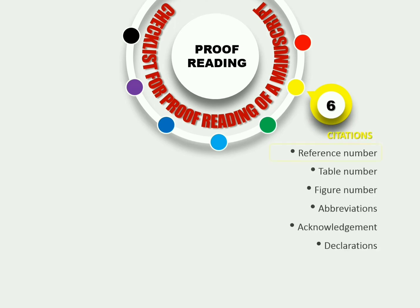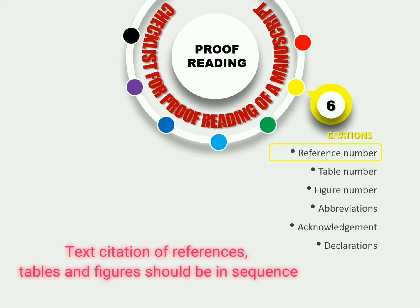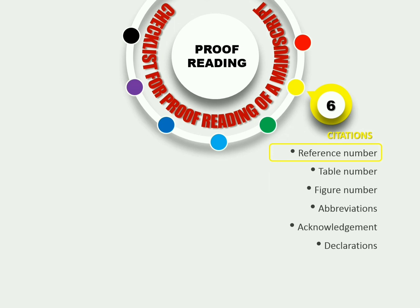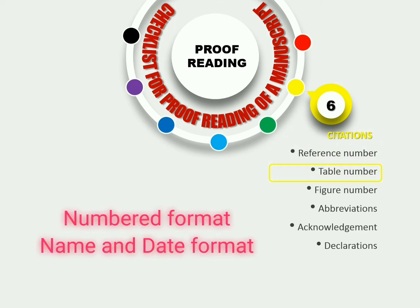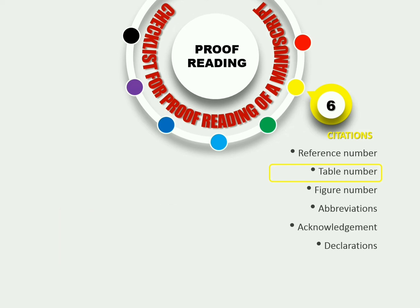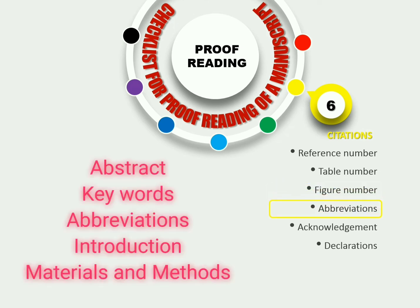Now the next point is citations. It is a very important factor and should require more attention for the authors. It starts from the reference number. All the references should be cited as per the journal's requirement, can be in numbered format or author name and date format. It should be ensured that all the references have been cited in the text. For better understanding, you can provide all the used abbreviations at one place in the manuscript. The best place for abbreviation is after abstract and keywords. It can be followed by the introduction and materials and methods.